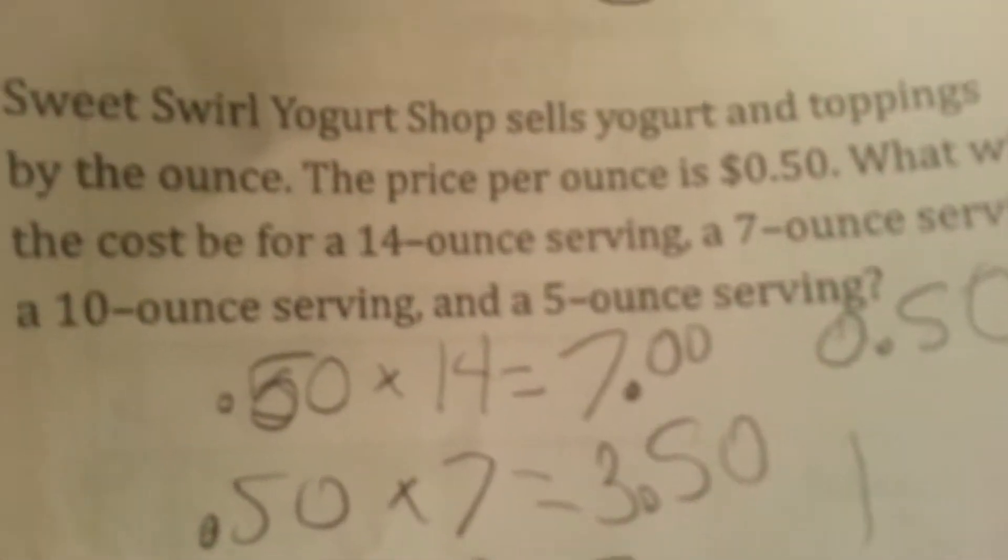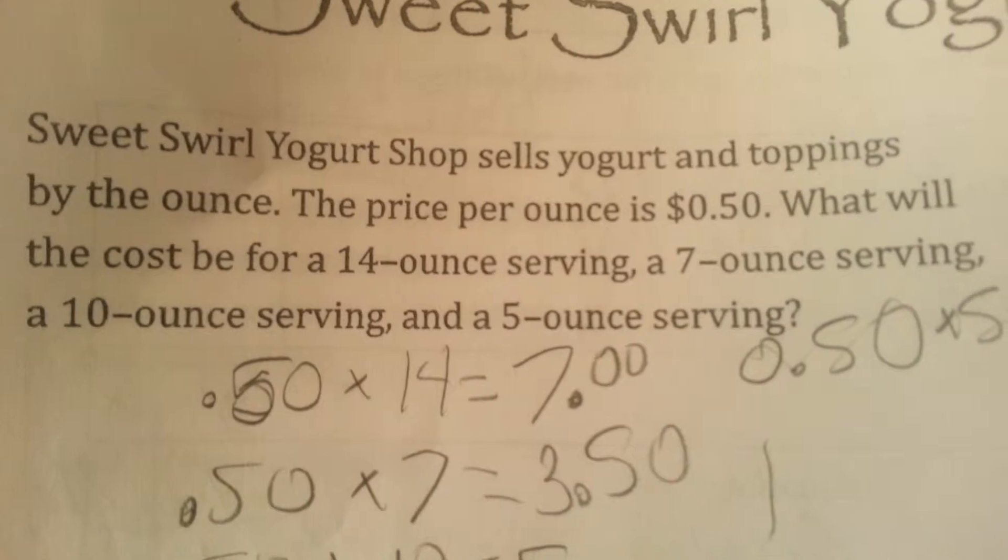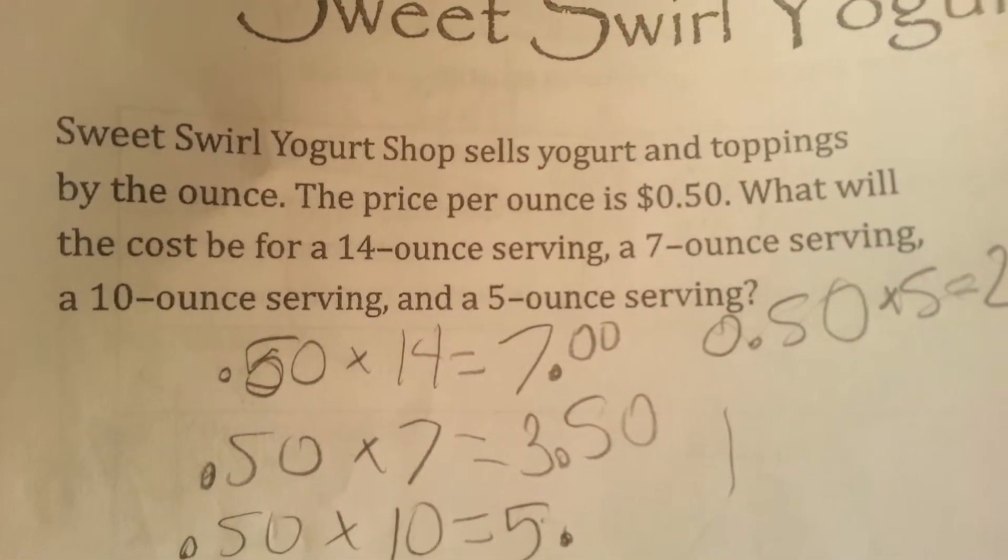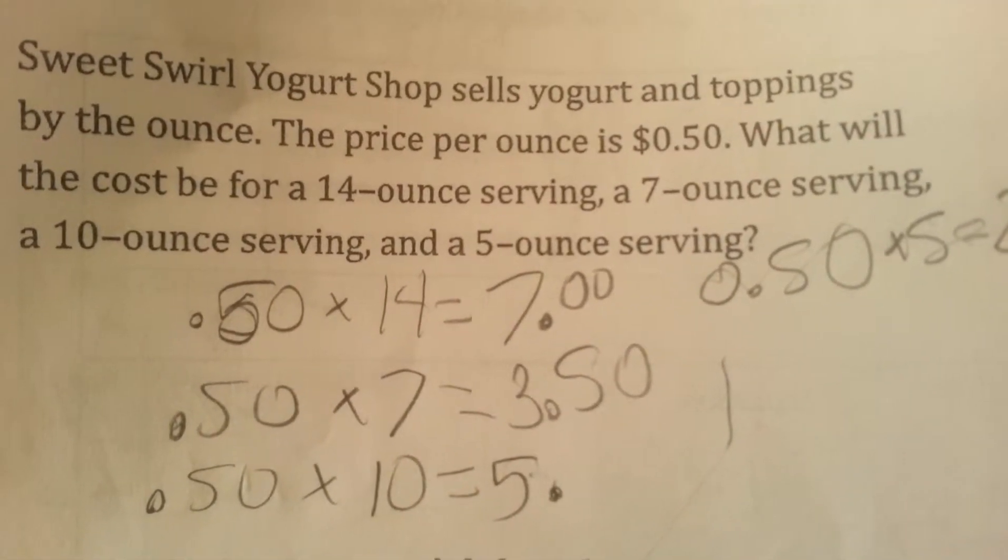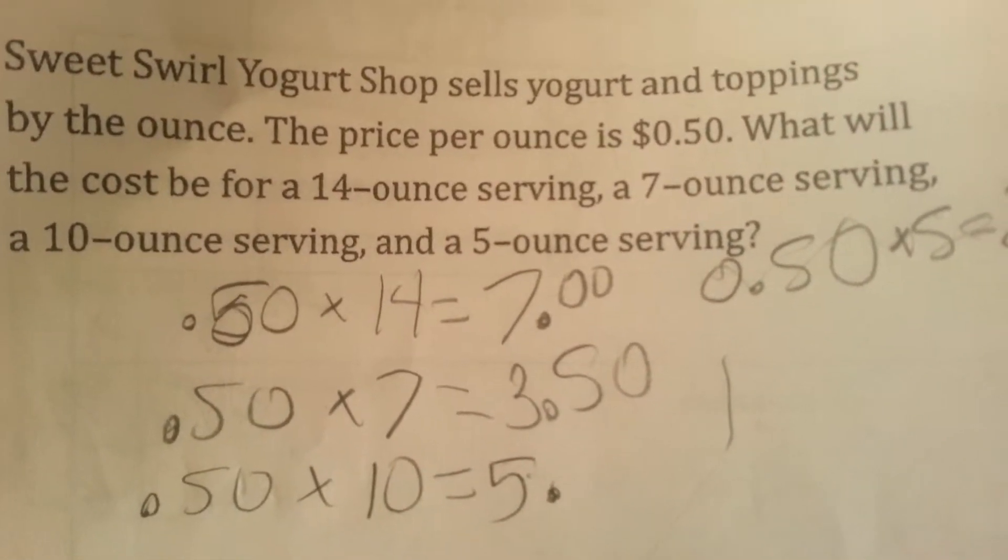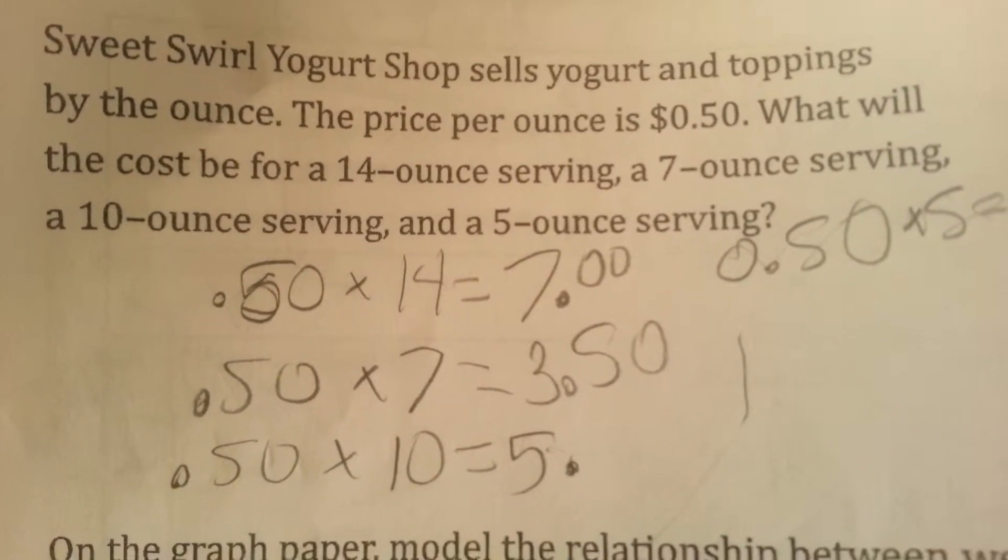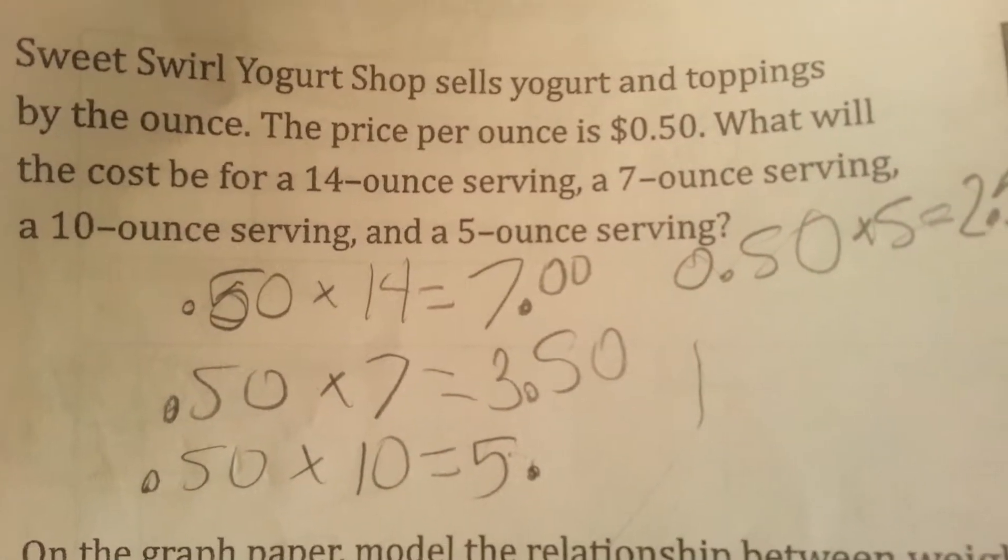Let's take a problem from here. Sweet Swirl Yogurt Shop sells yogurt and toppings by the ounce. The price per ounce is 50 cents. What will the cost be for a 14 ounce serving, a 7 ounce serving, a 10 ounce serving, and a 5 ounce serving?